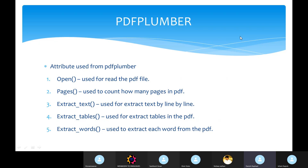The attributes used from PDF Plumber in our project: first, open — used to read the PDF, inside the parentheses you need to give the file link. Next, pages — used to count how many pages are present in the PDF. Next, extract_text — used to extract text line by line. Next, extract_table — used to extract a table in the PDF. Finally, extract_words — used to extract each word from the PDF.